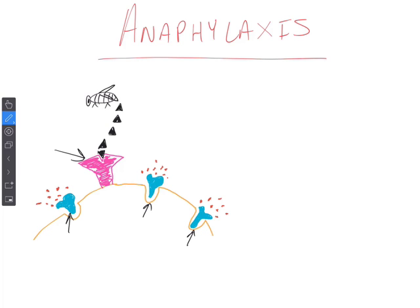When that occurs, these blue looking cells release chemical mediators. The mass release of chemical mediators has a profound effect on the body, mainly in four areas. The first is the heart — cardiac output is going to be decreased in the presence of anaphylaxis.